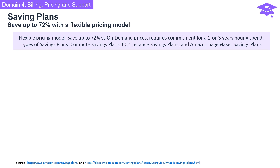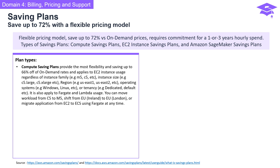AWS offers three types of savings plans. First, compute savings plans provide the most flexibility, offering savings up to 66% off on-demand rates. They apply to EC2 instance usage regardless of instance family, size, region, operating system, or tenancy.